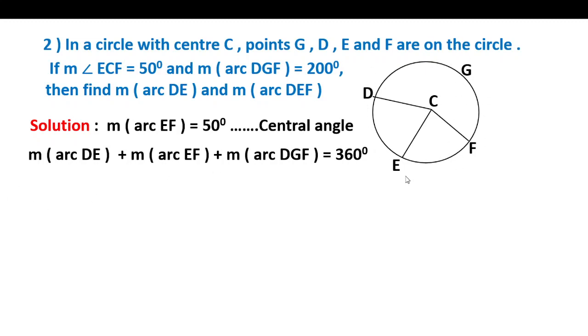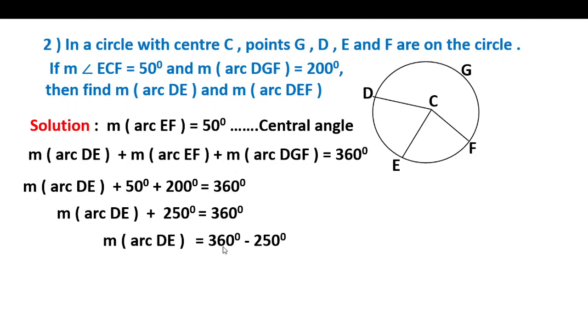Substituting the values: arc DE value is unknown, EF value is 50, and DGF value is 200. So arc DE plus 50 plus 200 equals 360. Arc DE plus 250 equals 360. Transfer 250 to get arc DE equals 360 minus 250. Measure of arc DE equals 110 degrees.